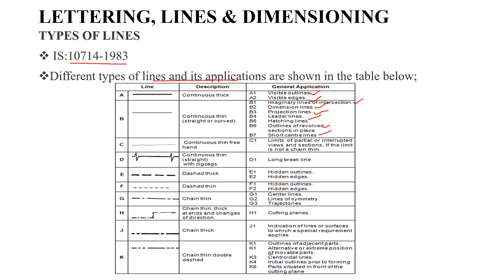The next type is continuous thin freehand lines. These are used for lines of partial or interrupted views and sections where the limit is not a chain-thin line. The next type is continuous thin straight with zigzag, which is used for long break lines.